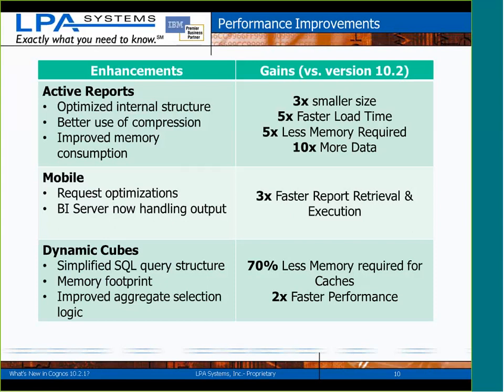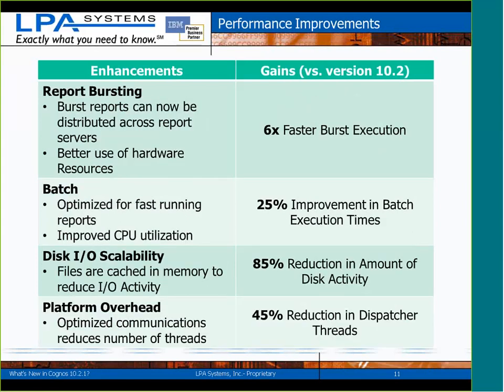Dynamic cubes have been focused on — those were released in 10.2, and 10.2.1 has continued to improve them. Simplified SQL queries in terms of what are generated from the cube definitions, less memory required for cached data, and improved use of the aggregate awareness algorithms will result in about 70% less memory required for caching and about double performance, according to the benchmarks.